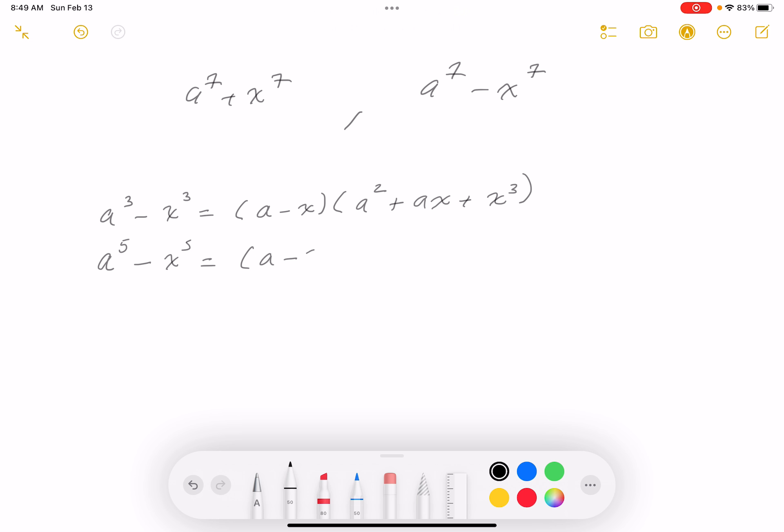It's going to be a minus x times a squared plus ax plus x squared. And then I'm going to put another one down, the ones that we've seen before, by the way. a^5 minus x^5. Well, it's got a pretty simple pattern to it. It's very similar to the one above it. It's going to be a minus x times a^4 plus a^3x plus a^2x^2 plus ax^3 plus x^4. And then I could write down a^7 minus x^7. These are patterns we've done before. You may not remember it, though. A lot of times I have to remind myself of what I'm doing as well by writing things down to remind myself what I've done in the past. Well, what's that going to be? a minus x times a^6 plus a^5x plus a^4x^2 plus a^3x^3 plus a^2x^4 plus ax^5 plus x^6.